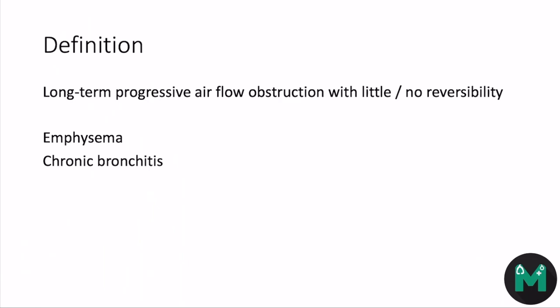Chronic bronchitis is defined as an airway obstruction with a productive cough for most days of about three months for two years. It involves inflammation and goblet cell hyperplasia. Similarly, there's a significant link between chronic bronchitis and smoking.